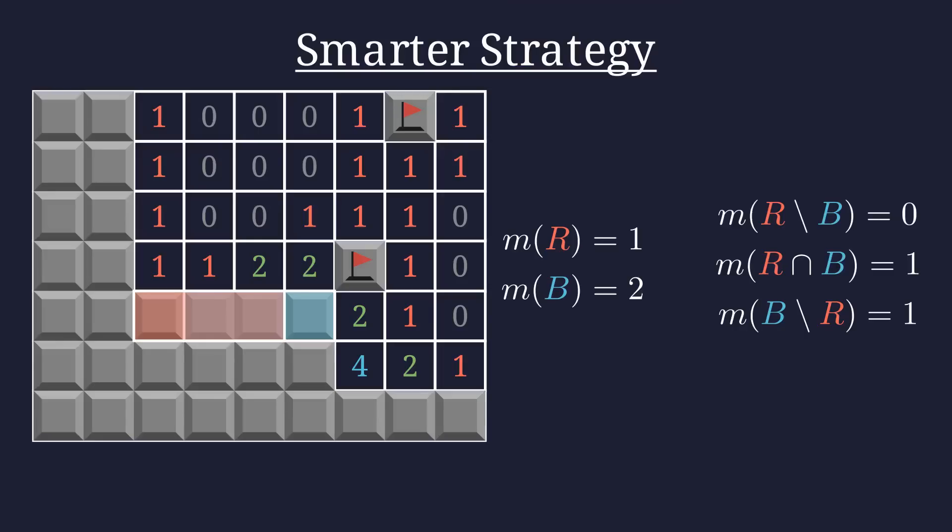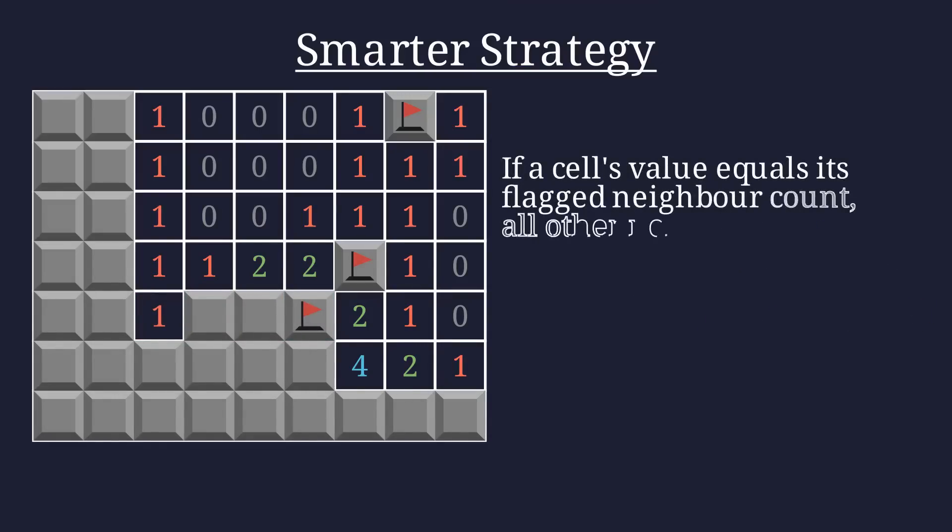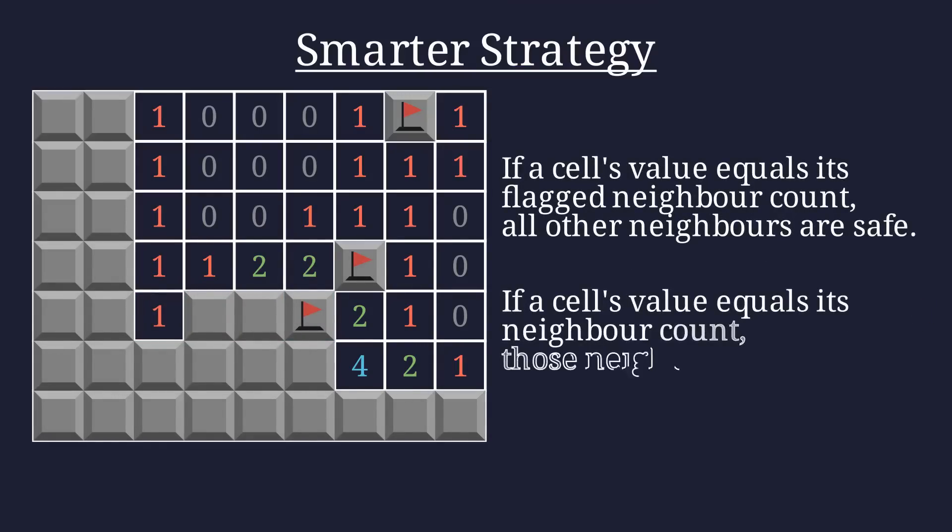Now that we know the number of mines in these smaller sets, we can reapply the strategy we established earlier. The mine count of R set minus B is zero, so all tiles in R set minus B are safe, and the mine count of B set minus R equals its size, so all those tiles must be mines. For this board in particular, we can now return to exclusively the two rules of our first strategy and complete the board.